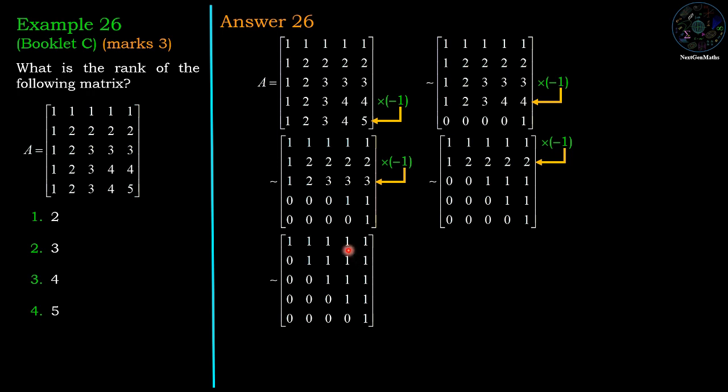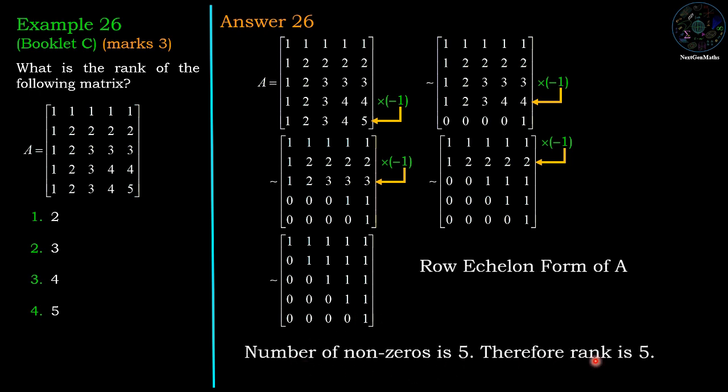This is the row echelon form of matrix A, and it has 5 nonzero rows. Therefore, the rank of matrix A is 5, which is option number 4.